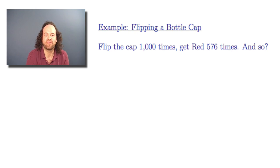To start off, let's remember that example with flipping bottle caps. If we flip a cap a thousand times and get 576 red, what does that tell us about the true probability of getting red when you flip the cap?